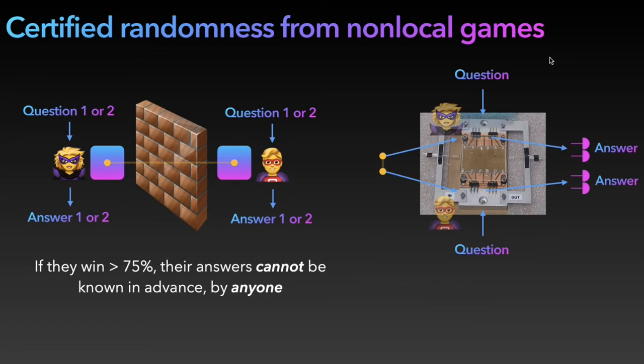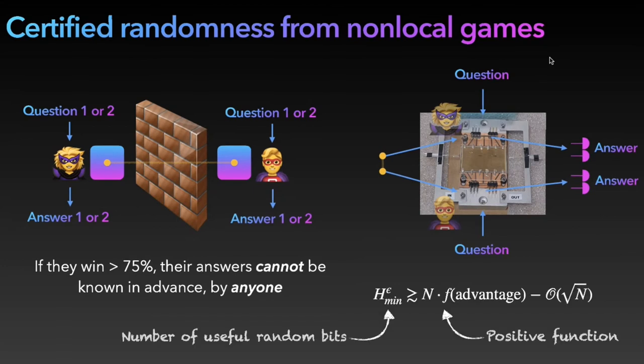Then we can show this kind of bound, that the quantity of interest, the smooth mean entropy h_epsilon_min, is bigger than n times, where n is the number of photon pairs that you send, some function of the advantage they observed when playing their game with some correction term. I don't have time to give you details about how to derive such relation. This is what we call a security proof. There is some complicated information theory behind it. What's important is that now we have a certified bound on the number of random bits that we produce in our experiment, and this bound is device independent. It holds even if our description of the device is not completely accurate.